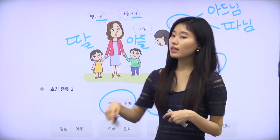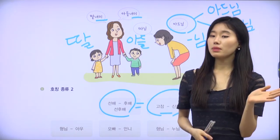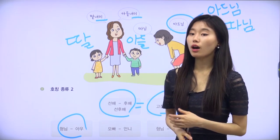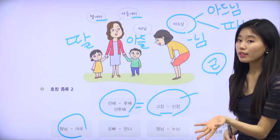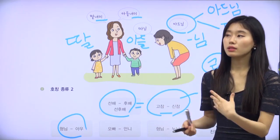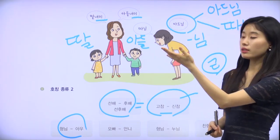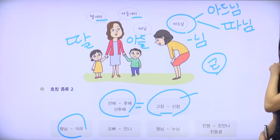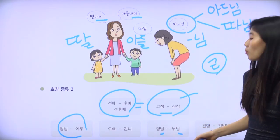형님 means elder, and 아우 means younger sibling — but sometimes these don't mean actual family. People can call someone older than them 형님, or call a younger person 아우, even if they are not actual siblings. In the same sense, 오빠 and 언니 can refer to real siblings or just someone older — it doesn't always mean family. Also, 형님 and 누님 are more respectful forms — 형님 is for male, 누님 is for female.